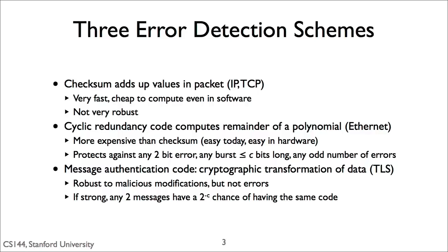In some ways, TCP and IP can get away with checksums because link layers use CRCs. If you have a CRC that's c bits long, a CRC can detect any 1-bit error, any 2-bit error, and any single burst of errors less than or equal to c bits long, as well as any odd number of errors. So you can detect a lot of errors — much stronger guarantees than a checksum.